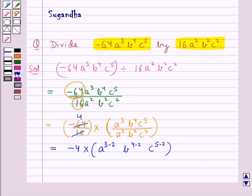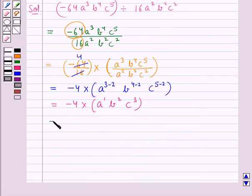So this is further equal to -4 times a¹ times b² times c³. That is, this is equal to -4ab²c³.